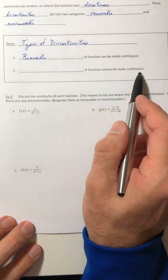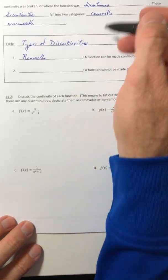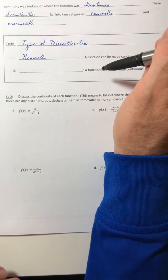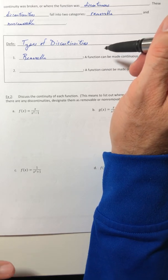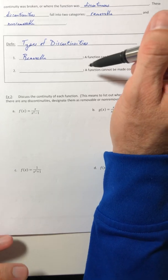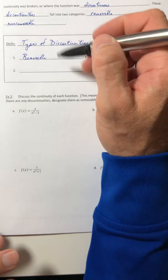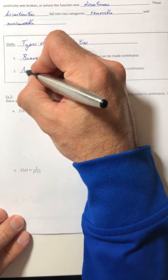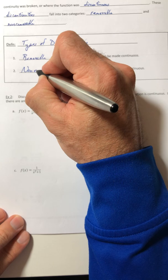And then the second one, if you can't make the function continuous, like you can't factor, you can't use a trig identity, you can't use a conjugate, you can't simplify the function down. That is a non-removable.